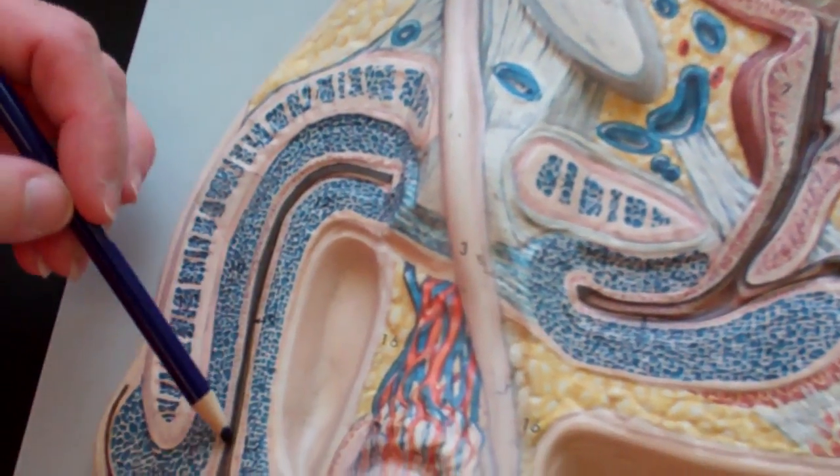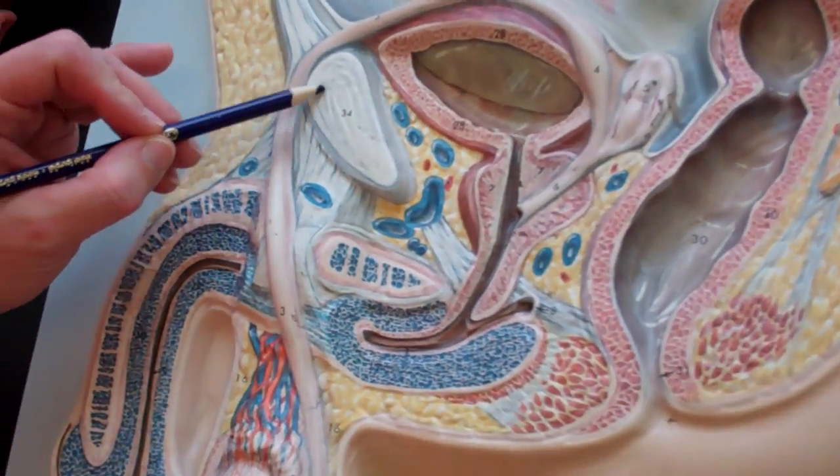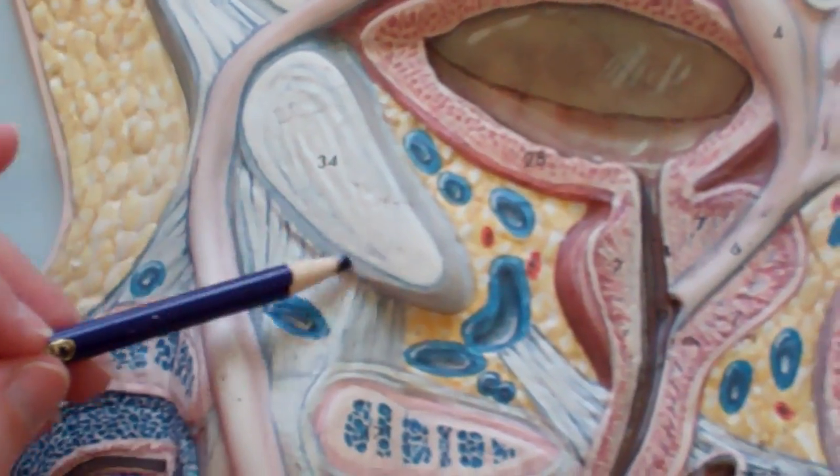And other than that, maybe the urethra. Those would be the things that I might pick. And oh I forgot, the pubic symphysis. The males have a pubic symphysis as well.